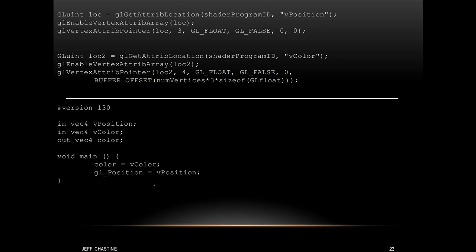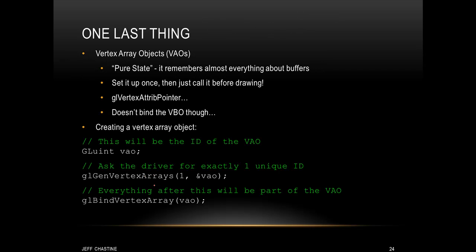So here's what the final code would look like. Now there is one last thing we need to talk about, and they're called vertex array objects (VAOs). Realize that you don't have to use these things, but they are pretty convenient because they can remember almost everything about buffers. The basic idea is that you set them up once, and then you call them just before you draw your triangles to the screen. The nice thing is that vertex array objects can remember all the glVertexAttribPointer setup. However, you need to keep in mind that it doesn't actually bind the vertex buffer object, so you have to do that manually.